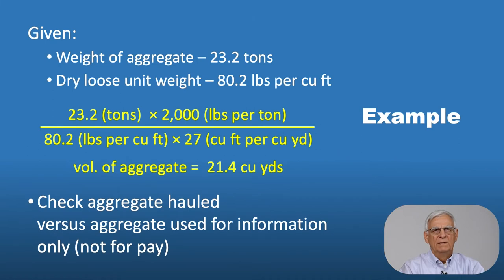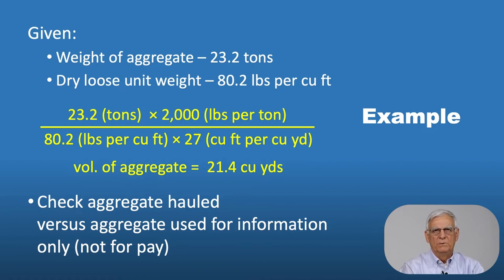For example, if an aggregate truck has 23.2 tons of aggregate and the dry loose unit weight from the laboratory test is 80.2 pounds per cubic foot, we take 23.2 tons times 2,000 pounds per ton, divided by 80.2 pounds per cubic foot times 27 cubic feet per cubic yard, and we get 21.4 cubic yards. So 23.2 tons of aggregate has a volume of 21.4 cubic yards in its loose condition. We can use this to check the amount of aggregate hauled to a project versus the amount actually used — for information only, not for pay.